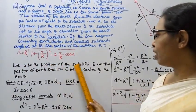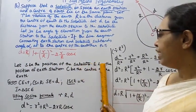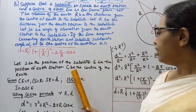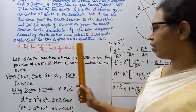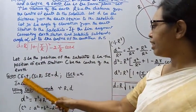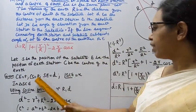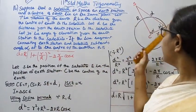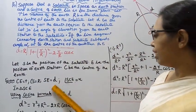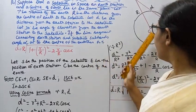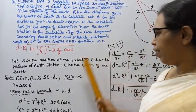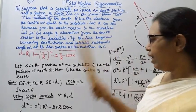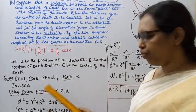Let S be the position of the satellite, E be the position of the earth station, and C be the center of the earth. So CE equals small r, CS equals capital R, and ES equals small d. The angle SCE equals alpha. In triangle SCE, we will apply the cosine formula.